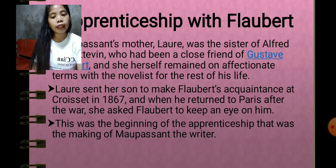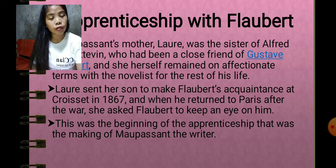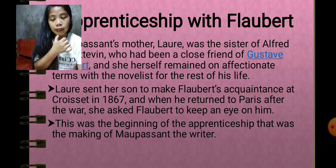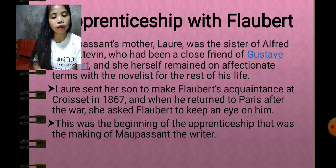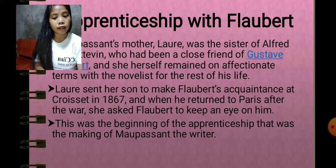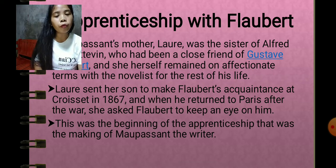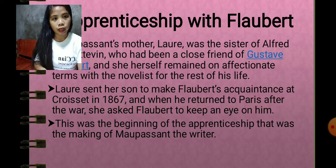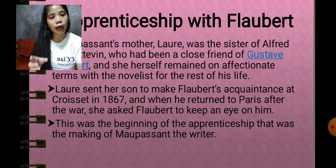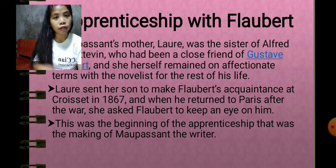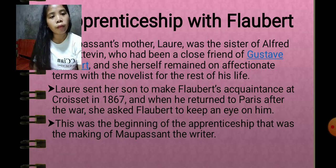This was the beginning of the apprenticeship that was the making of Maupassant the writer. Whenever Flaubert was staying in Paris, he used to invite Maupassant to lunch on Sundays, lecture him on prose style, and correct his youthful literary exercises.